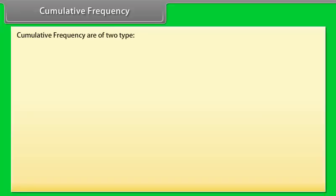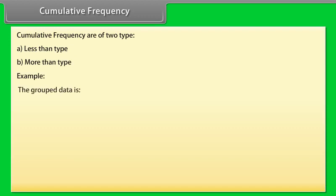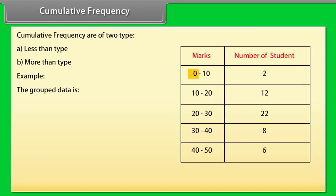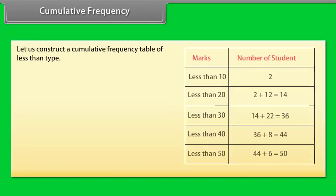Cumulative frequency is of two types: less than type and more than type. Let us understand it with an example. The grouped data is: for marks 0 to 10, number of students is 2; for marks 10 to 20, number of students is 12; for marks 20 to 30, number of students is 22; for marks 30 to 40, number of students is 8; for marks 40 to 50, number of students is 6.